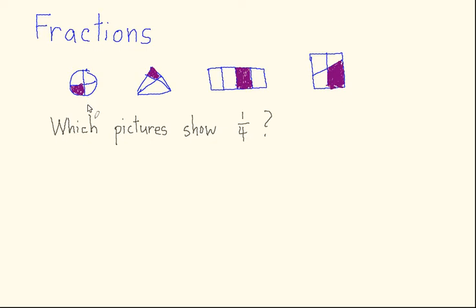Let's think about that for a second. First let's look at this circle. I've drawn two lines that divide the circle in half, and then in half again, so I've got four pieces. These four pieces are approximately equal to each other in size. So this first picture of the circle does indeed represent one fourth — you'd be right, you get a check mark.